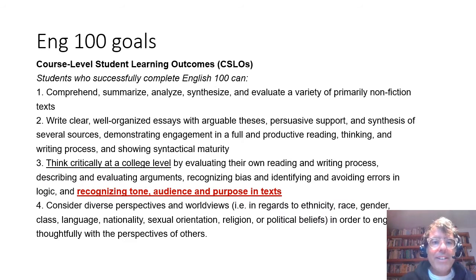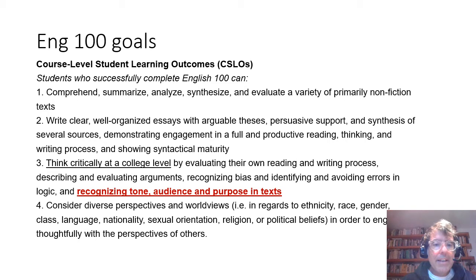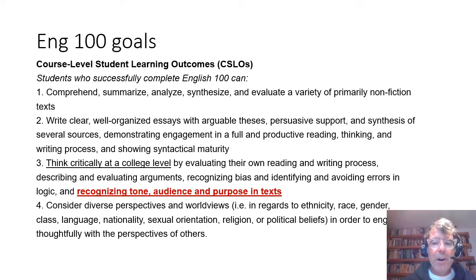These are the course outcomes for English 100. These were in your syllabus, so you've seen them before. If you'd like to read them again, hit pause on your video right now and just read them through. These are the goals for the whole course. You can see that we are focused on CSLO number three, which is about critical thinking, and we are focusing on the part that says recognizing tone, audience, and purpose in texts.